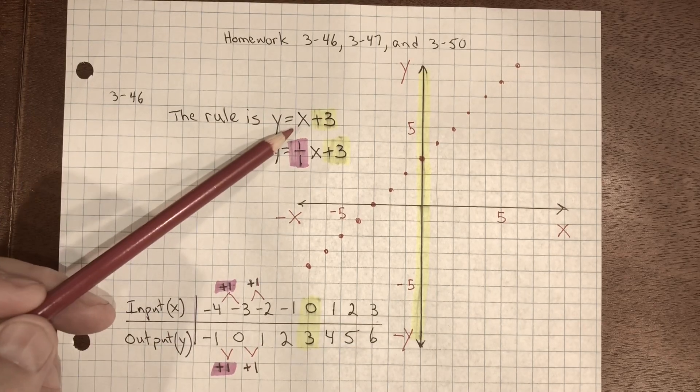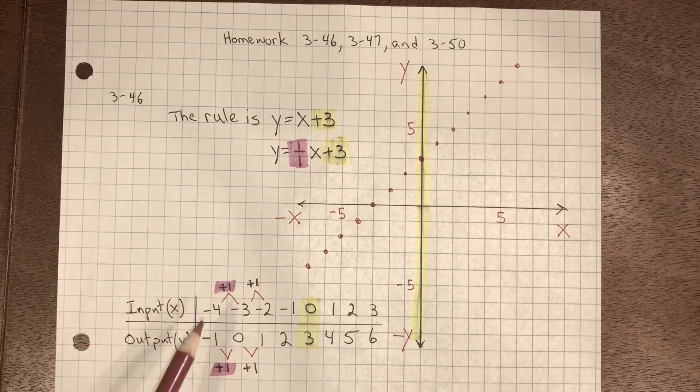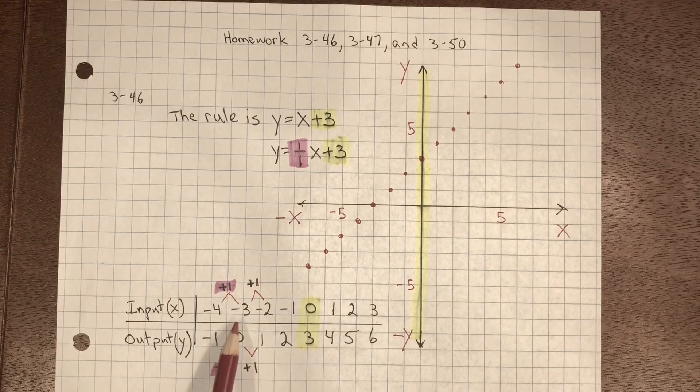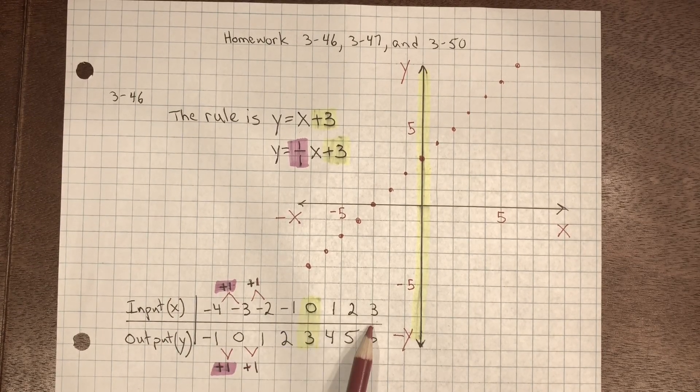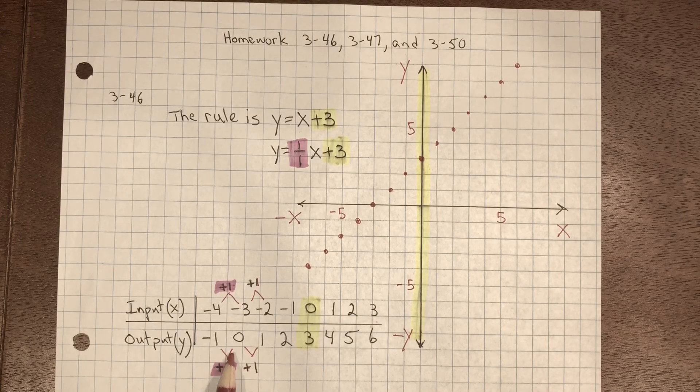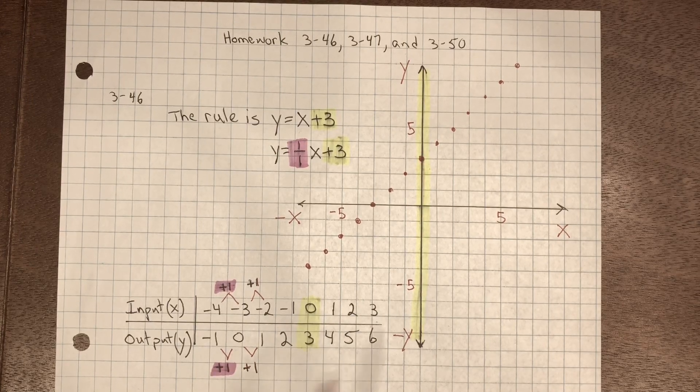So my rule works for every input value I have here. Just because it works for one doesn't mean that's going to work for all. So it's important for you to check several of your input values and you get the correct output value.